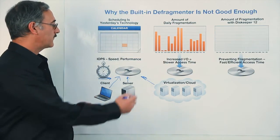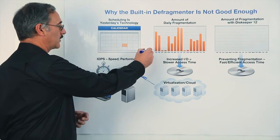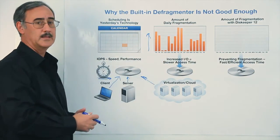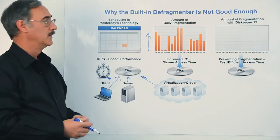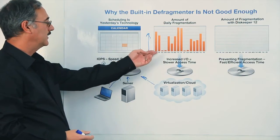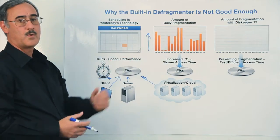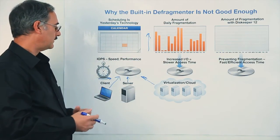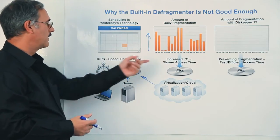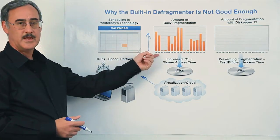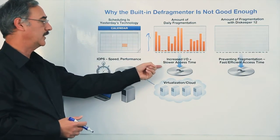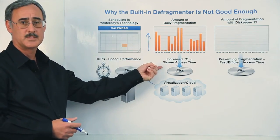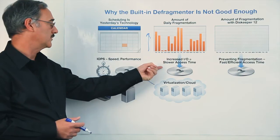So as fragmentation occurs on a natural, daily basis, it takes more and more I.O.s to complete the job. The more I.O.s it takes, certainly you're having slower access time to your storage.